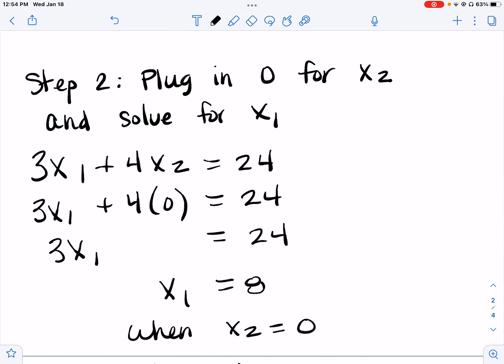Step 2: plug in 0 for x2 and solve for x1. 3x1 plus 4x2 equals 24. Plug in 0 for x2, so 4 times 0 is 0. We get 3x1 equals 24. So divide by 3, we get x1 equals 8. x1 equals 8 when x2 equals 0.